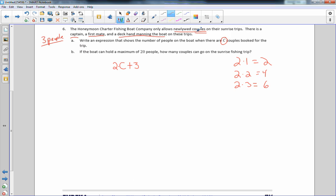Part B says if the boat can hold a maximum of 20 people, how many couples can go on the boat? So a maximum of 20 people.